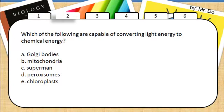2. Which of the following are capable of converting light energy to chemical energy? That would be the chloroplasts, found in plant cells, via the process of photosynthesis.